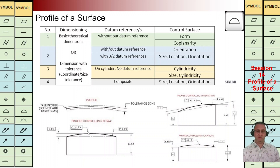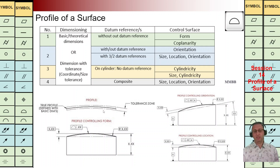Just as an example, on the left-hand side we can see we don't have any reference plane. It means we are going to check just the profile of this surface — two parallel surfaces with the same shape of that surface, and the surface should be in that tolerance zone. We can see these surfaces there.